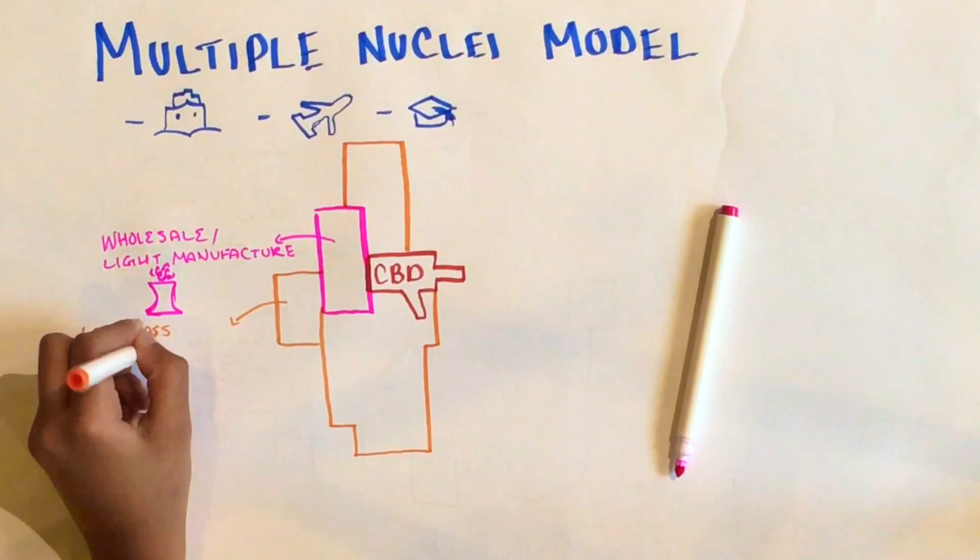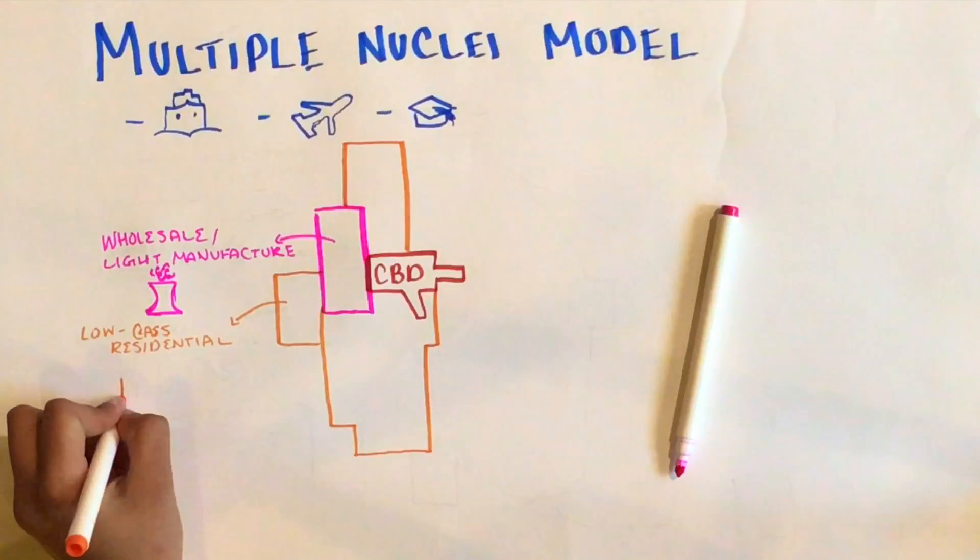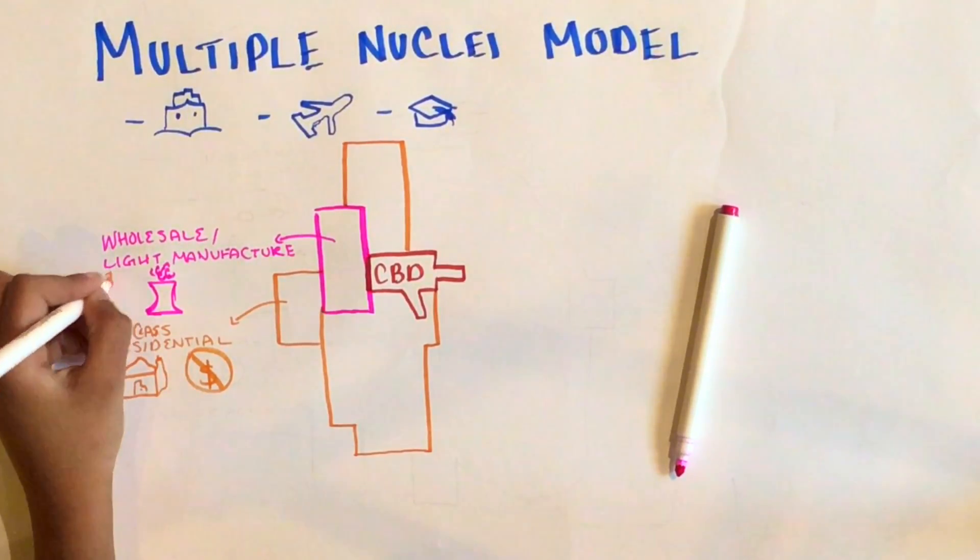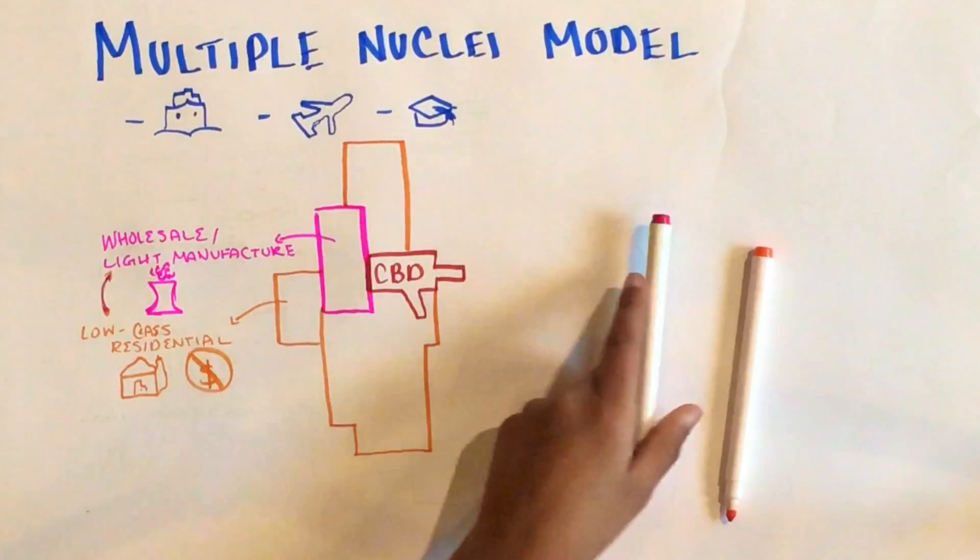The next would be the low-class residential area. This would be next to the industry, also characterized with low-income housing, and also having a low standard of living.